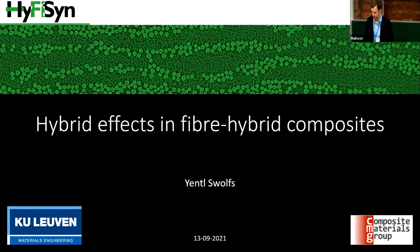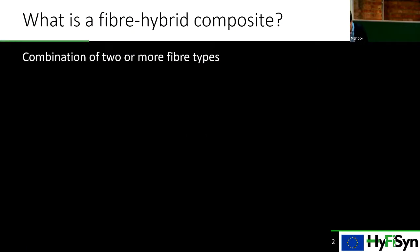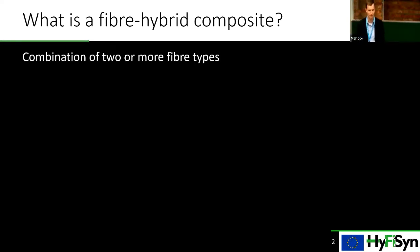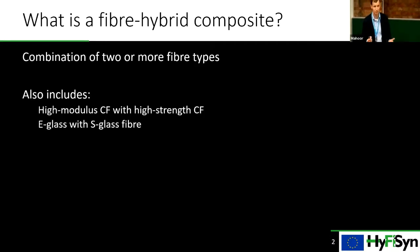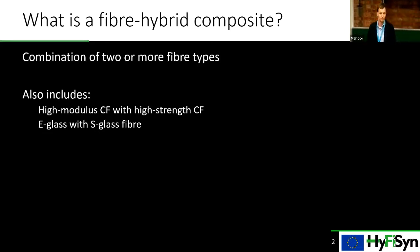I want to start off with defining what a fiber hybrid composite is. If I were to say hybrid composites, it's a little bit ambiguous — sometimes it also includes nanoparticles reinforcing a carbon fiber composite. When it's a fiber hybrid composite, it very specifically means two or more different reinforcing fibers combined together. This can be carbon-carbon hybrid, so a high modulus carbon fiber with a standard modulus carbon fiber. As long as the two fiber types are different, you can in principle get hybrid effects and synergies.